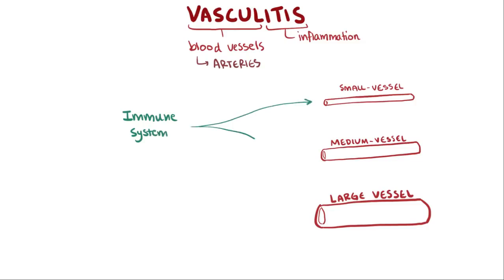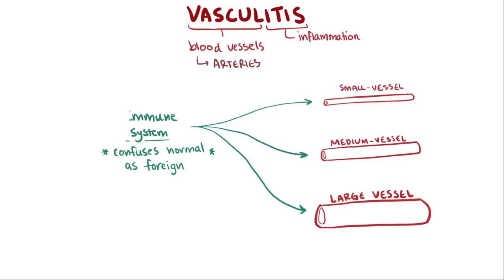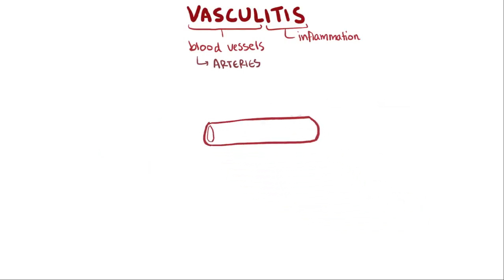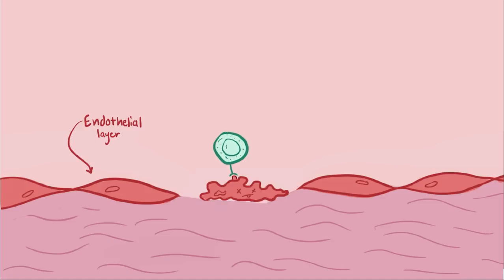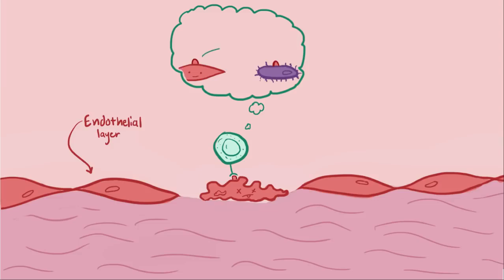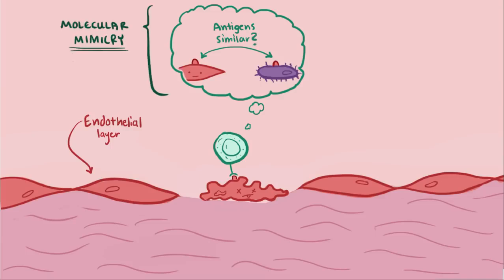Typically vasculitis is due to an autoimmune disease, where the immune system confuses a part of the normal body as a foreign invader. Sometimes the body confuses the innermost layer of the blood vessel — the endothelial layer — with a foreign pathogen and directly attacks it. The white blood cells mix up the normal antigens on the endothelial cells with antigens of foreign invaders like bacteria, simply because they look similar. This is called molecular mimicry, and is thought to be the cause of several types of medium vessel and large vessel vasculitides.